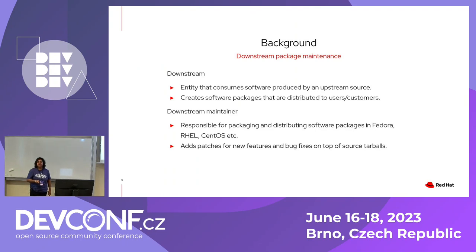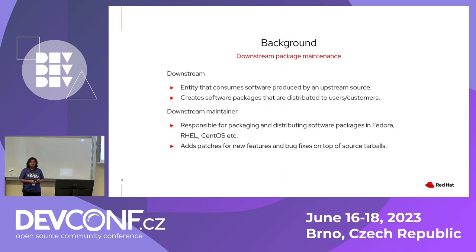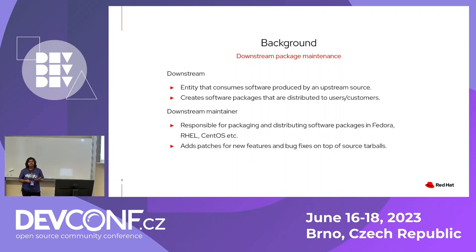So what is downstream package maintenance? While upstream open source communities create original source code, downstream is an entity that consumes this code, packages it, and distributes it into various Linux distributions. A downstream maintainer packages and distributes into Fedora, RHEL, and CentOS. Downstream maintainers also add downstream patches — feature requests from customers, security bugs, critical vulnerabilities, and so on — on top of source tarballs.